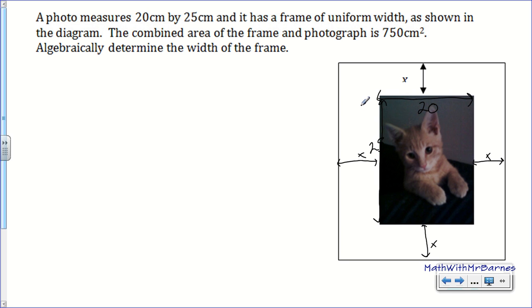I'm just going to label this x all the way around here. And it says that my photograph of this lovely kitty is 20 by 25. So I'll call this guy up here 20. And then this guy right here 25. So we need to set up an equation for this particular scenario. When you're talking about combined area, you're always going to think area equals length times width. So I know the area is 750.